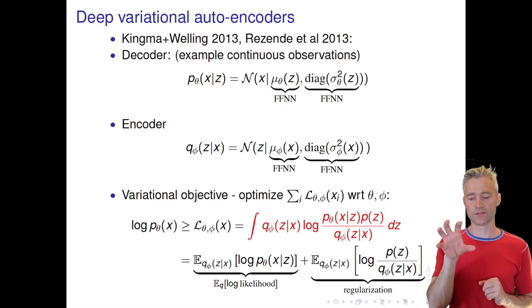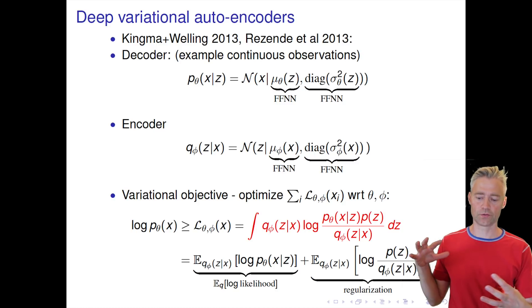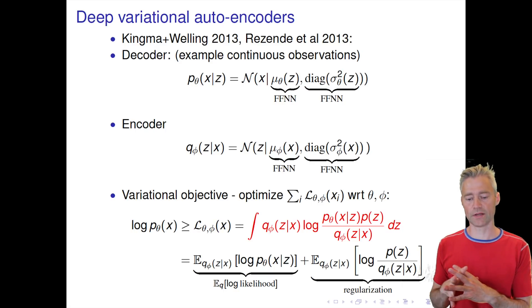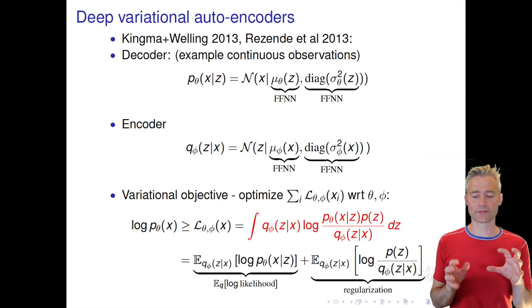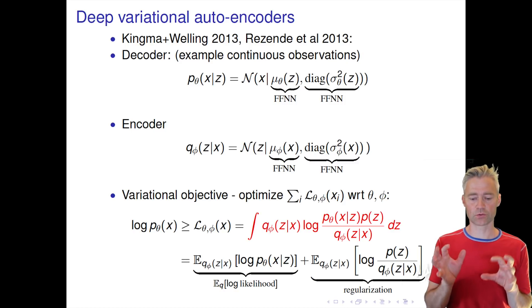So this term will actually try to squeeze this q distribution towards the prior distribution. If it does that, then it has not learned anything about the data.